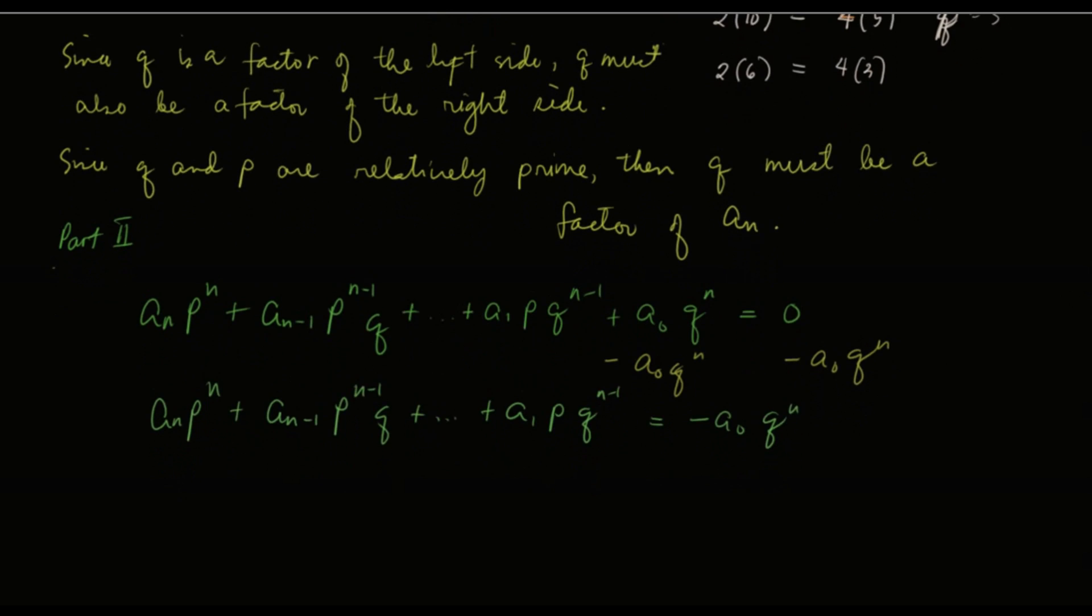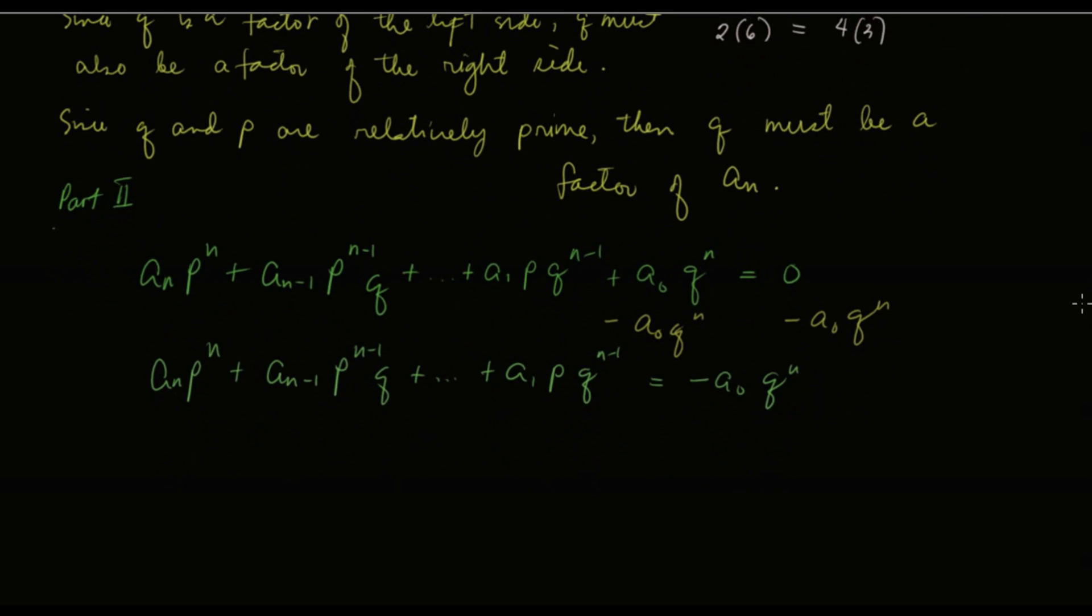Now, we will factor out p, because we want to prove that p is a factor of a sub 0. So we'll factor out p, so that's p times a sub n p raised to n minus 1.